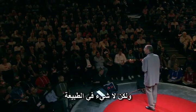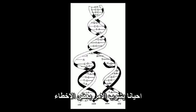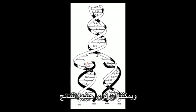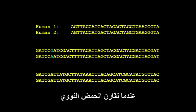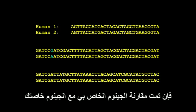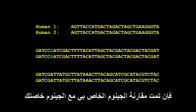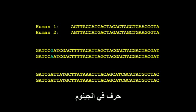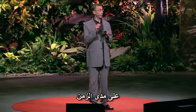But nothing in nature is totally perfect, so sometimes an error is made and a wrong letter is built in. We can see the result of such mutations when we compare DNA sequences among us. If we compare my genome to a genome of yours, approximately every 1,200 to 1,300 letters will differ between us, and these mutations accumulate approximately as a function of time.